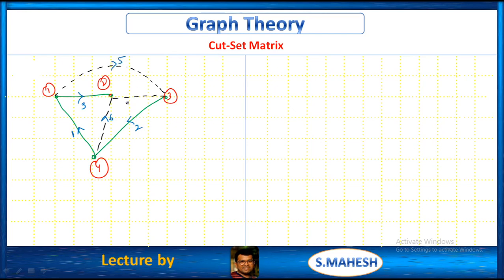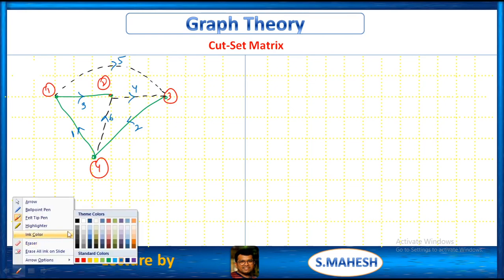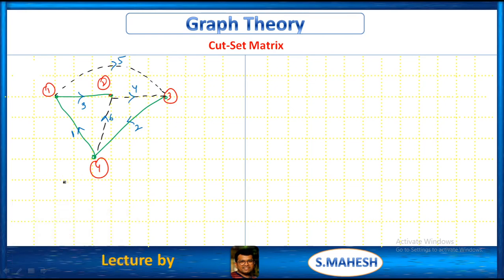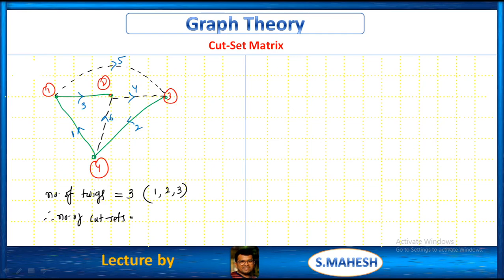The directions are: branch 3 upwards, branch 1 here, branch 6 upwards, branch 2 downwards, branch 5 clockwise. How many twigs do we have? Number of twigs is 3 — branches 1, 2, 3. Therefore, the number of cut sets is 3.